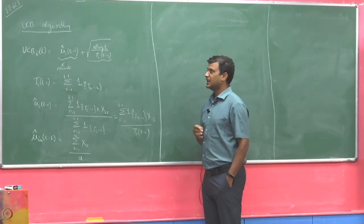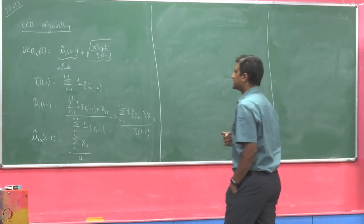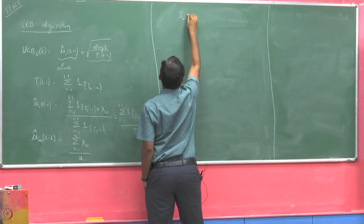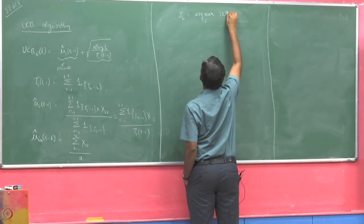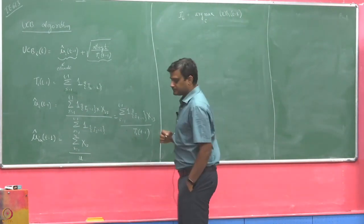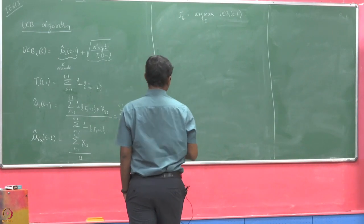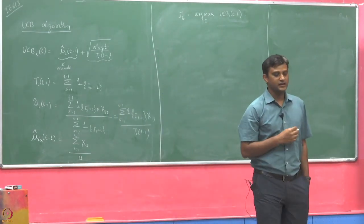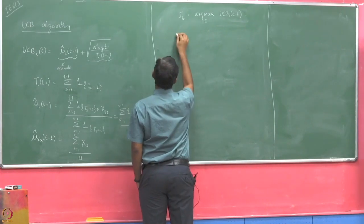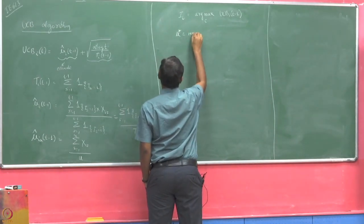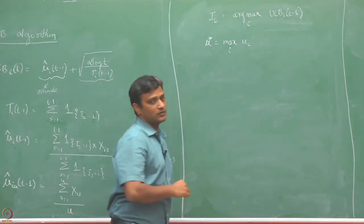Our goal is to determine the regret of the UCB algorithm, which selects arms according to the highest UCB index in each round. To prove the regret bound, we are going to use the regret decomposition result shown last time. Recall that mu* is the mean of the arm with the highest mean across all arms.